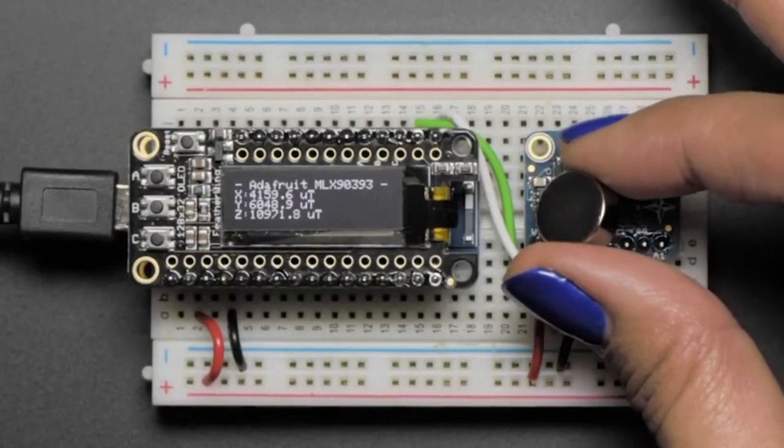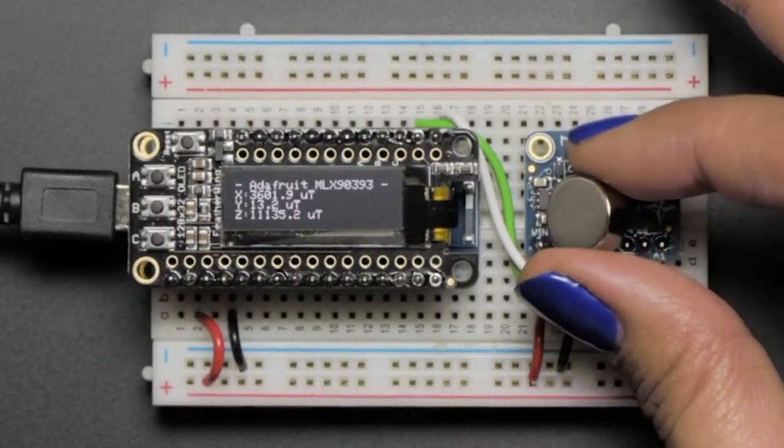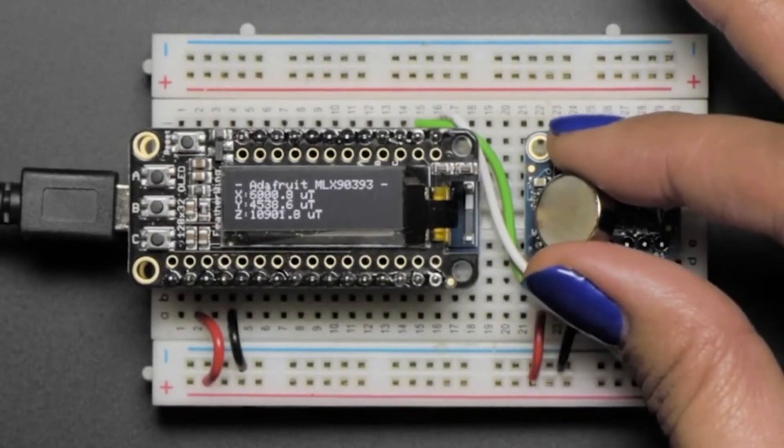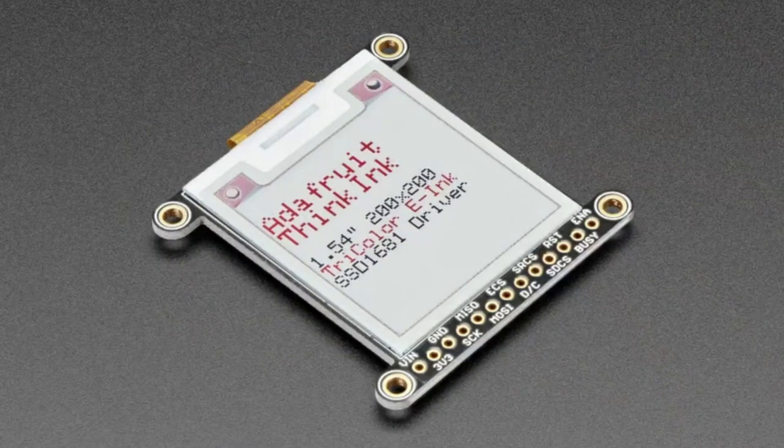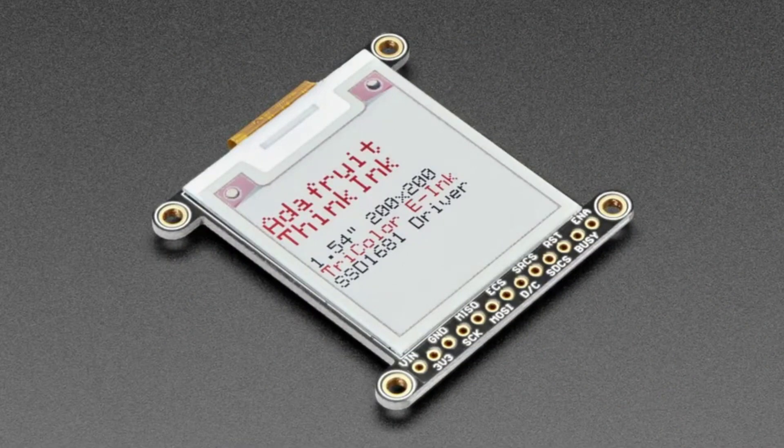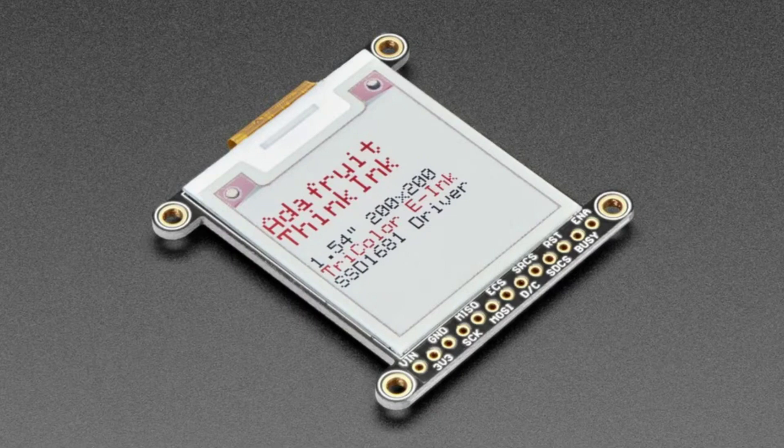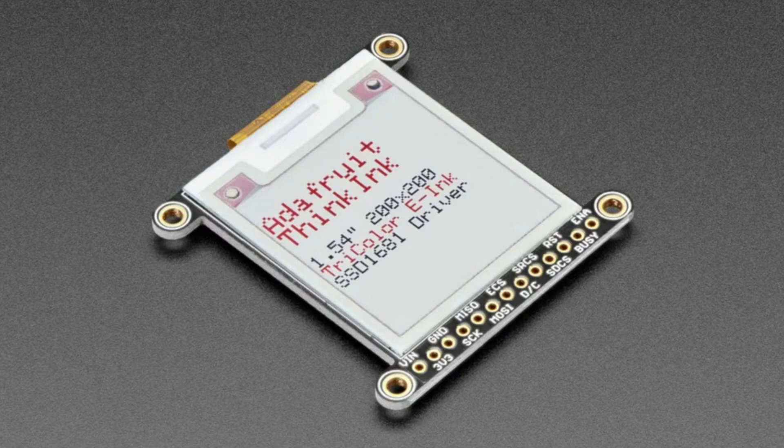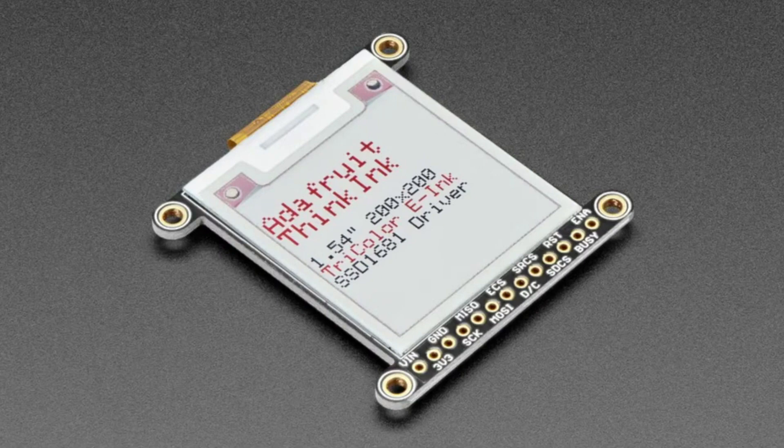And the star of the show tonight, besides you lady, and our community, our customers, and our team, is the updated 1.54 inch e-ink display. Now it's a 200 by 200 pixel display. This looks a lot like the tricolor e-ink we've already had in the shop. So what's new? Instead of 152 by 152, it's now 200 by 200 pixels, so more pixels.